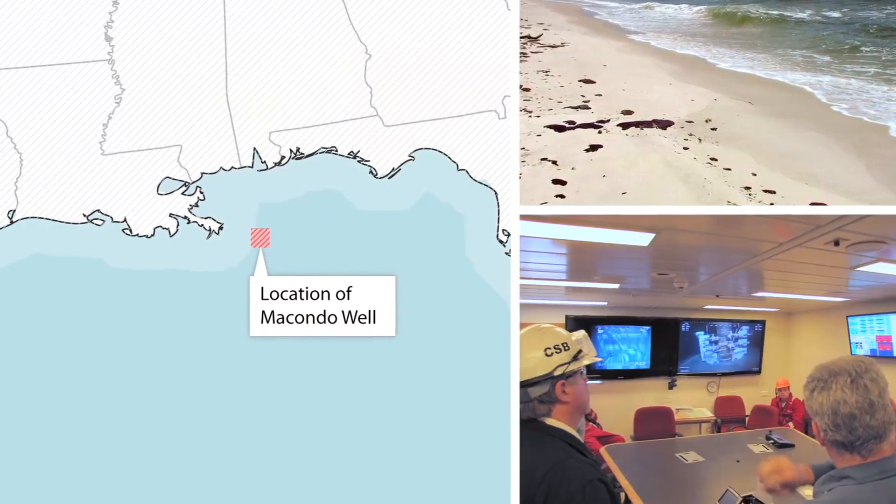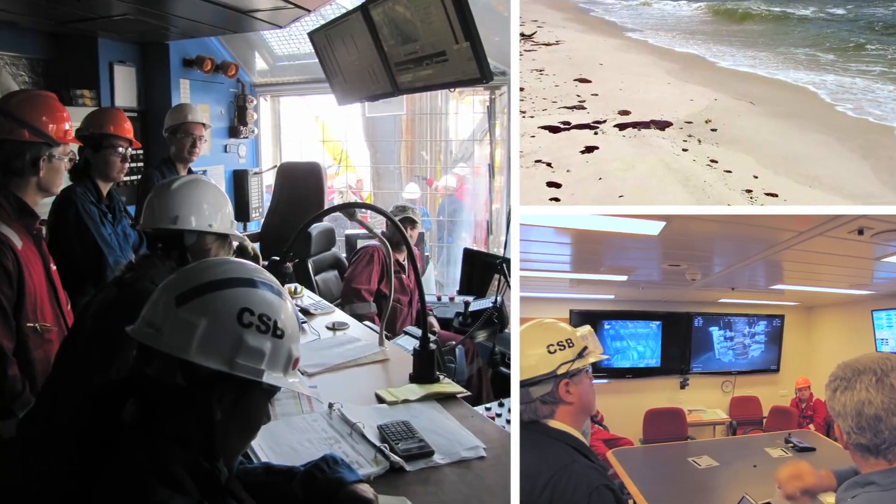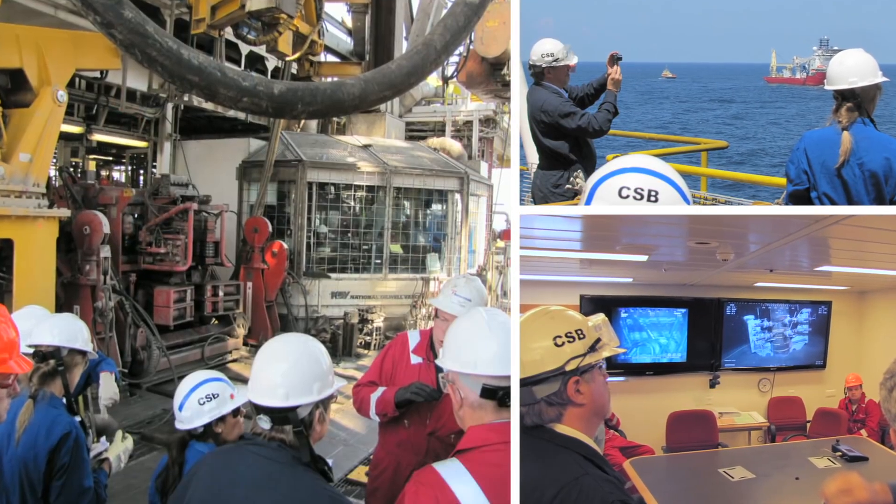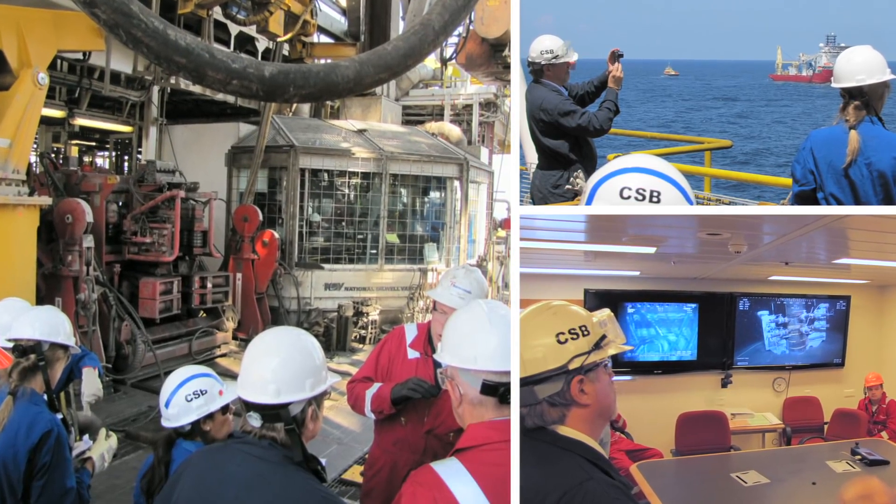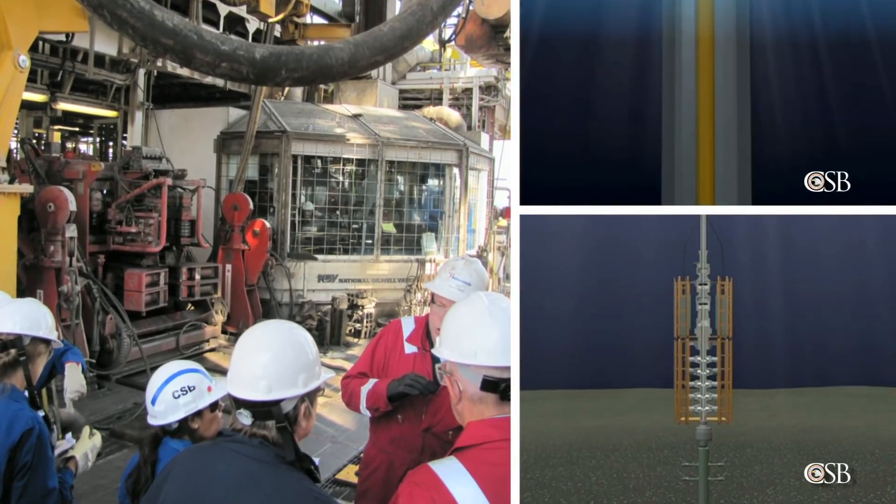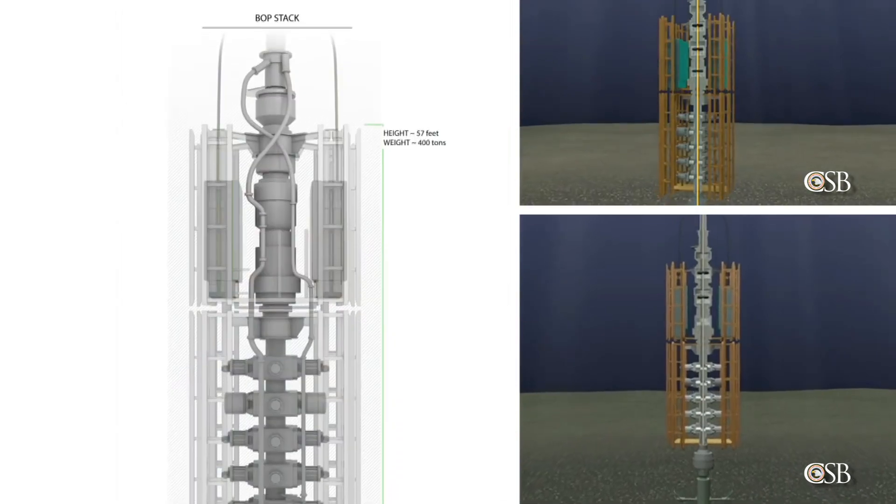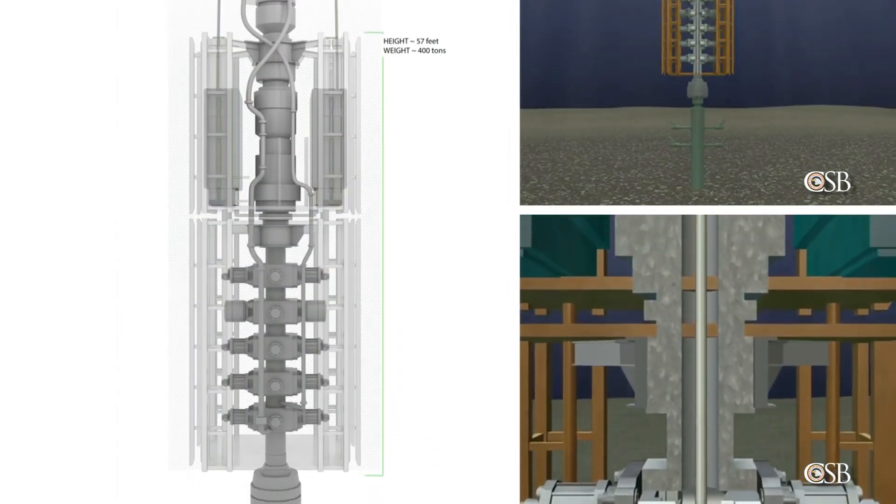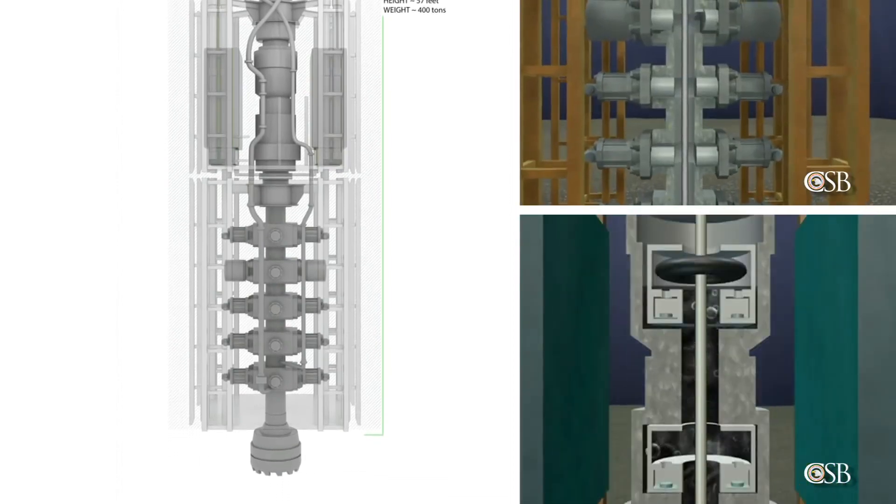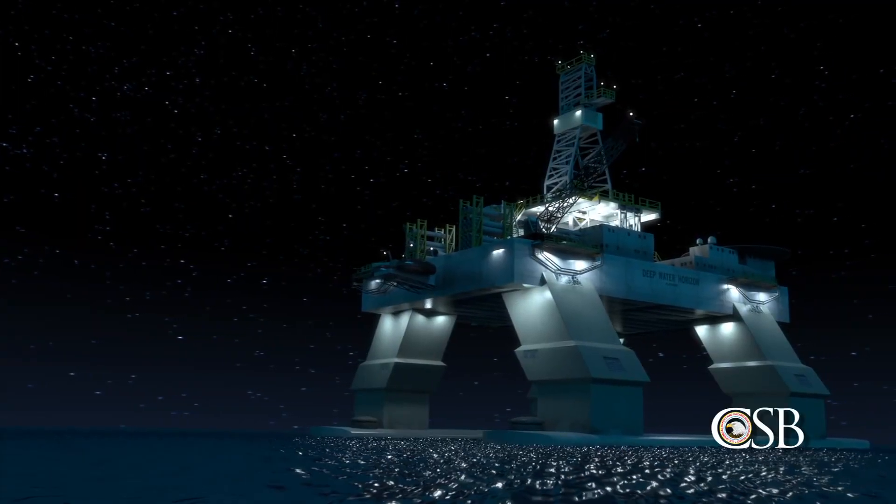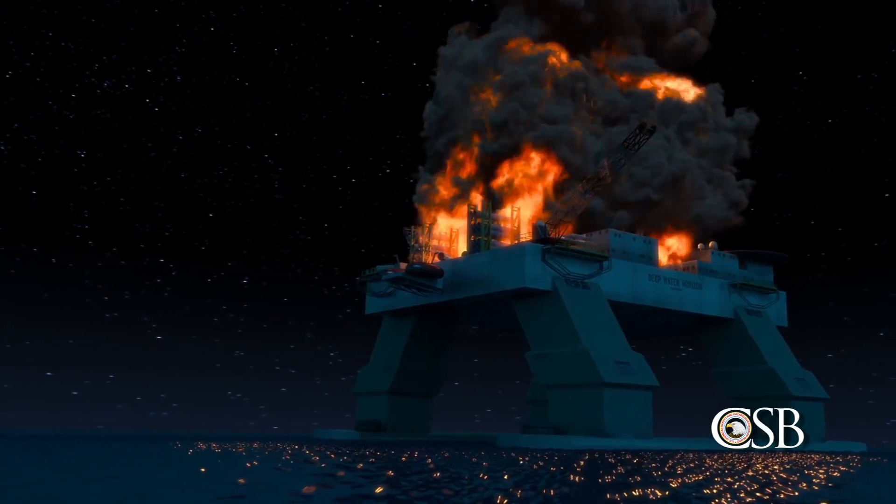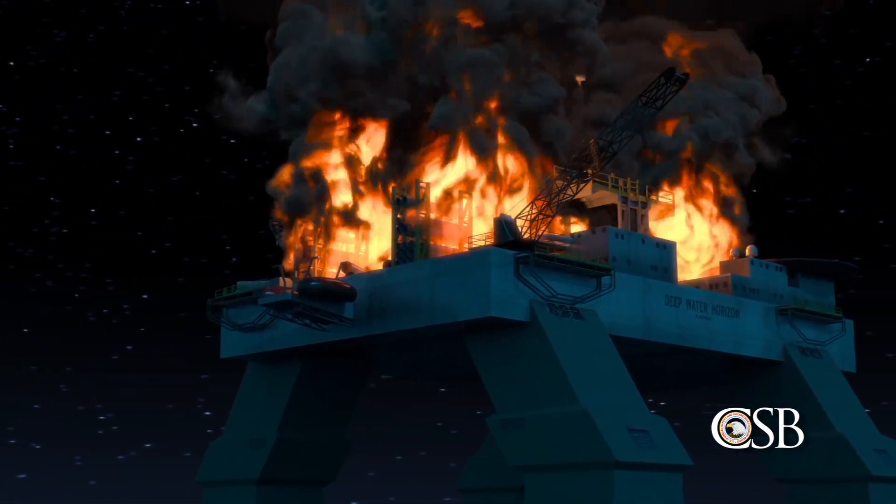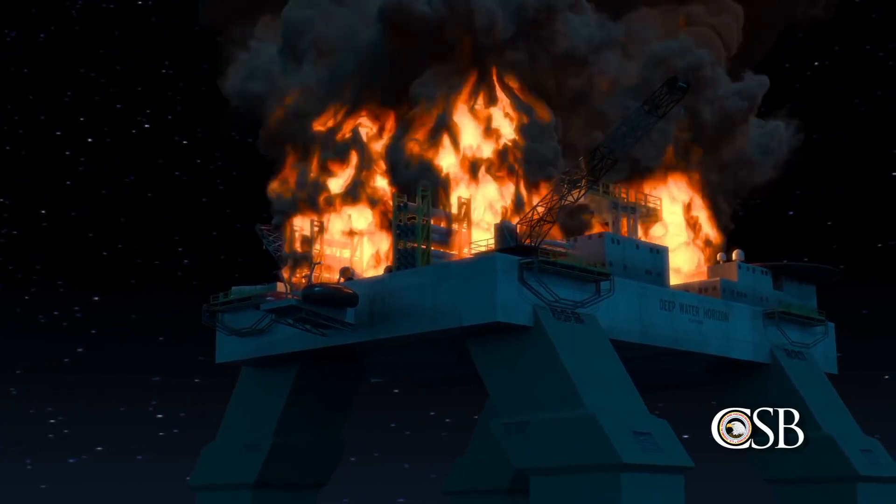In 2010, the CSB launched an investigation to examine the technical, organizational, and regulatory factors that contributed to the accident. During the investigation, the CSB made new findings about why a key piece of safety equipment, the Deepwater Horizon's blowout preventer, failed to seal the well during the emergency. These new findings help explain why the accident was so devastating, and the CSB cautioned that other blowout preventers currently in use could fail in similar ways.